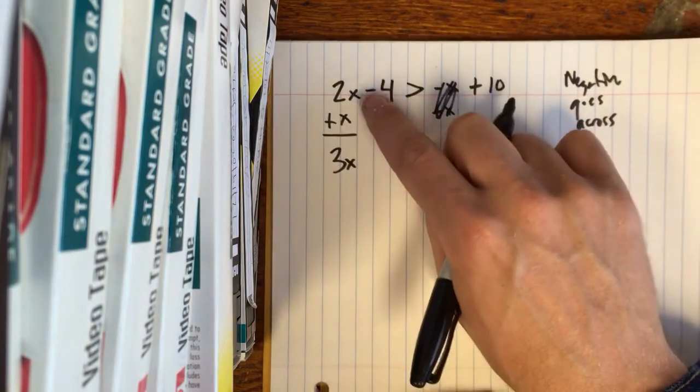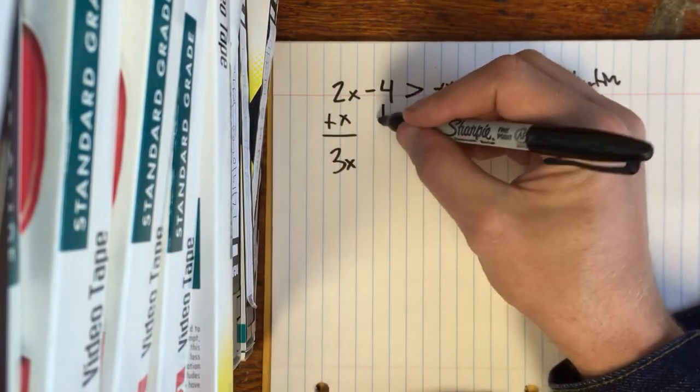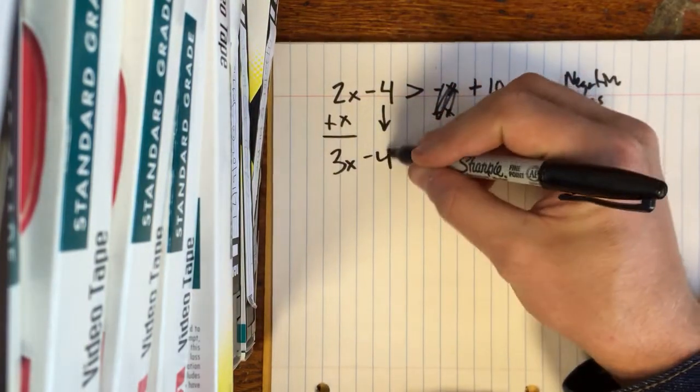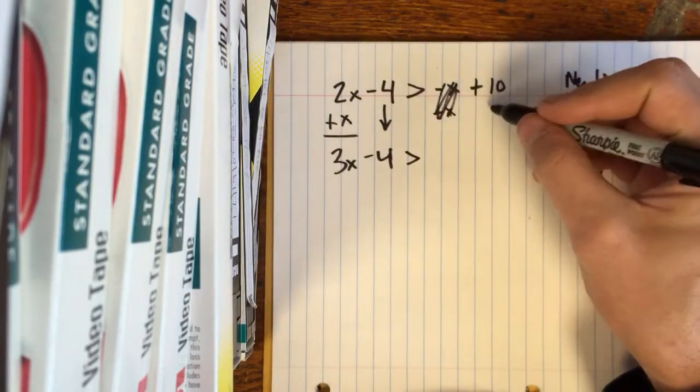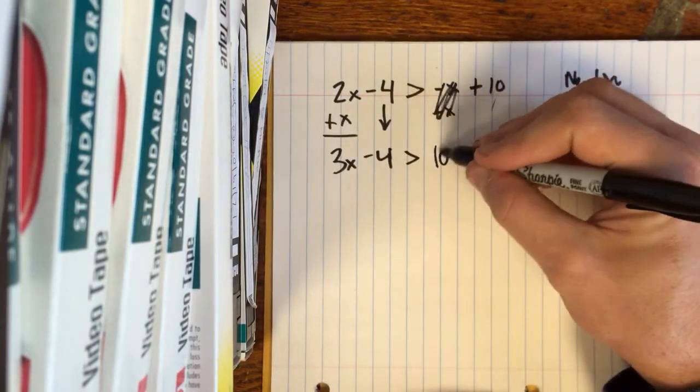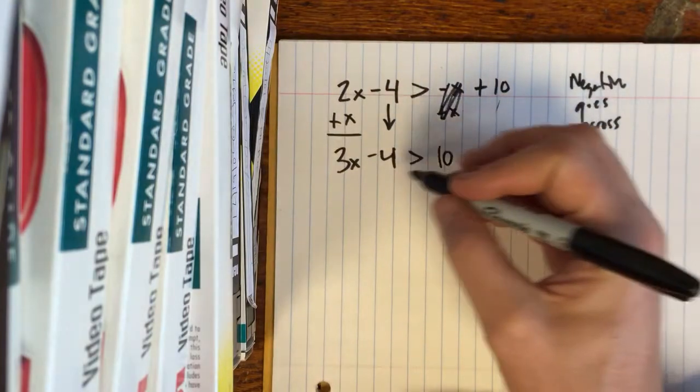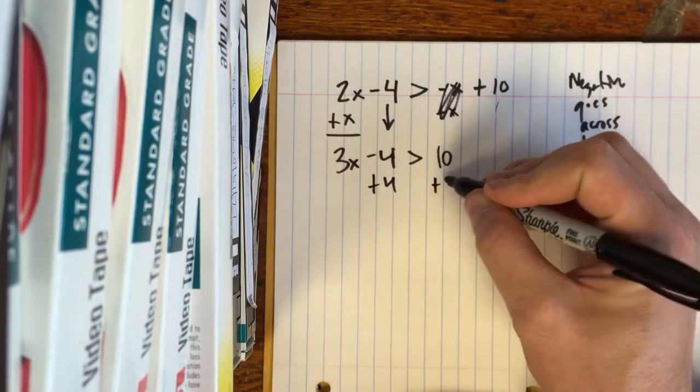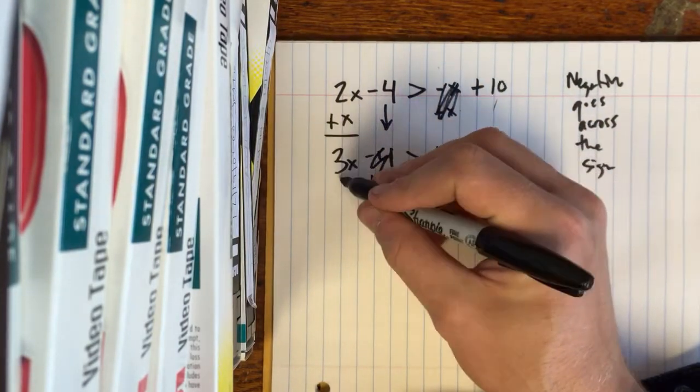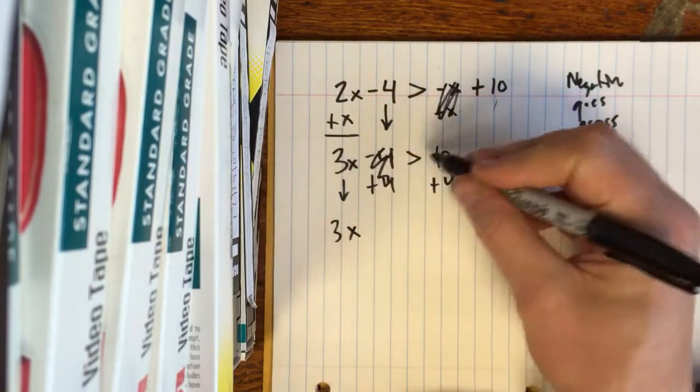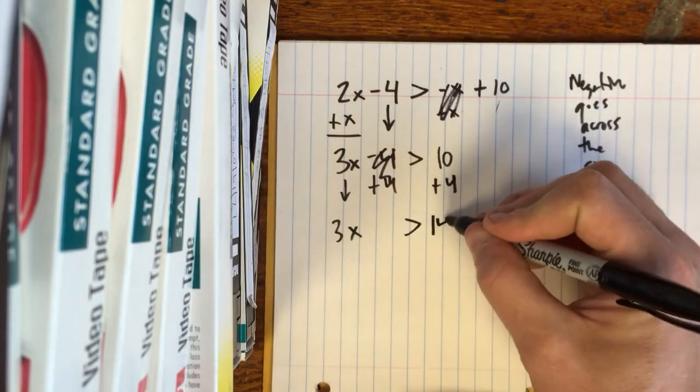Okay, now I'm gonna bring this down: negative 4 and greater than, and then bring nothing down there, and then 10. Now I want to get my numbers over here, so I add 4 to both sides. That becomes 0. Bring all my stuff straight down: greater than 14.